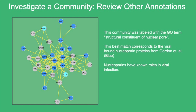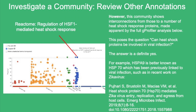The CDAPS app lets us zoom in from the model to see the interactions that are underneath a community. This community was labeled with the GO term 'structural constituent of nuclear pore.' This best match corresponds to the viral bound nucleoporin proteins from Gordon et al. in blue. The nucleoporins have known roles in viral infection. However, this community shows interconnections from those to a number of heat shock proteins, made apparent by the full GProfiler analysis below. This poses the question: can heat shock proteins be involved in viral infection? The answer is a definite yes — for example, HSPA9 is better known as HSP70, which has been previously linked to viral infection, such as in recent work on Zika virus.